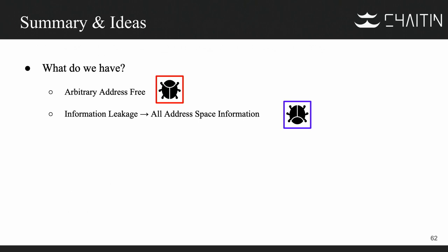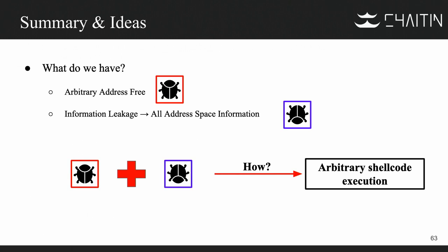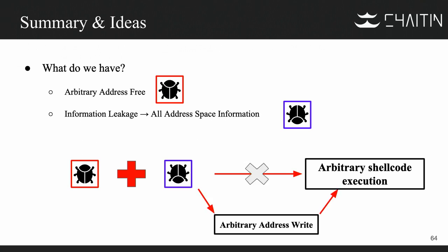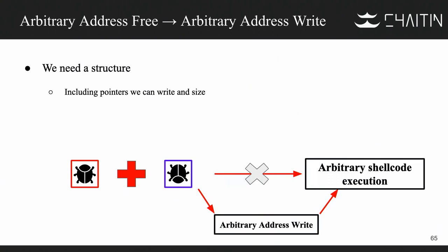So what do we have now? On one side, we can free an arbitrary address using the first exploit. With the second, we have full address space information. Our goal is to execute arbitrary shellcode in the VMX process. What we can do more easily is write to an arbitrary address. To turn an arbitrary free into an arbitrary write, we need a structure containing writable pointers and a size field, so that we can overwrite the structure and then easily write to arbitrary addresses. We need a structure that lives on the heap.